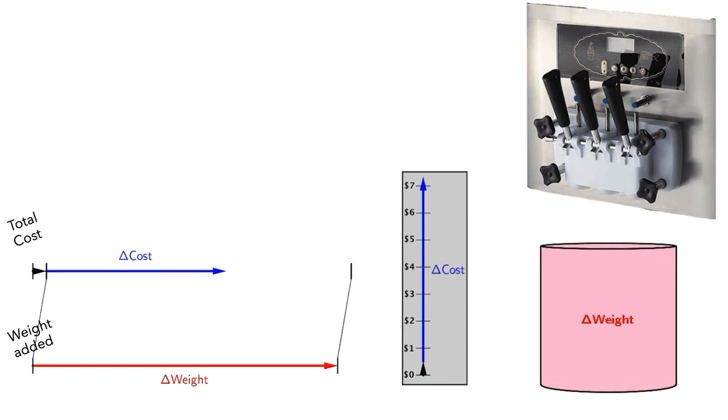However, what you might have noticed is that, no matter how large delta weight was, delta cost, measured in dollars, was always about 0.59 times as large as delta weight, measured in ounces. This is what it means to have a constant rate of change.